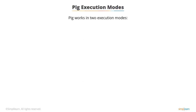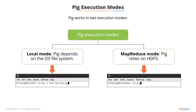PIG works in two execution modes: local and MapReduce. In local mode, the PIG engine takes input from the Linux file system and the output is stored in the same file system. In MapReduce mode, the PIG engine directly interacts and executes in HDFS and MapReduce.